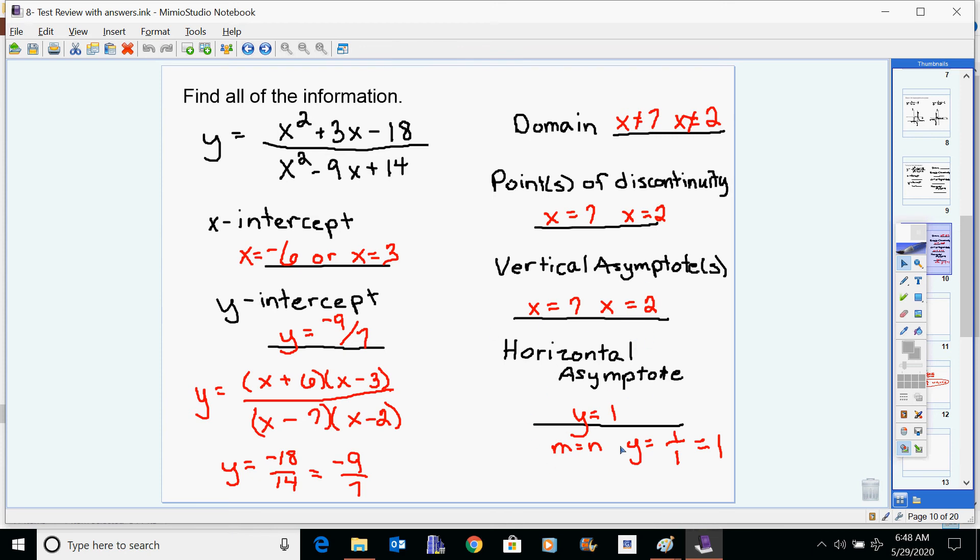The horizontal asymptotes, we look at these exponents. And since they're equal, you have to take the coefficients of these terms, which in this case happens to be one, and take one over one. And that gives you your horizontal asymptote of one. It's a little bit different than the other asymptote problems because we've got, we no longer just have a simple inverse variation. We've got more to it. So you do have to look at these coefficients to be able to figure out your horizontal asymptote.